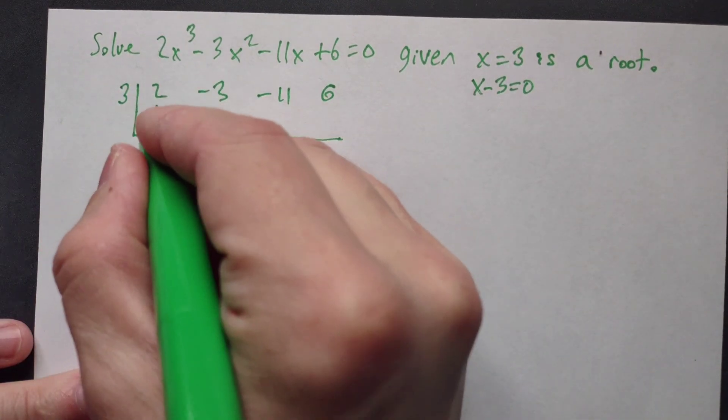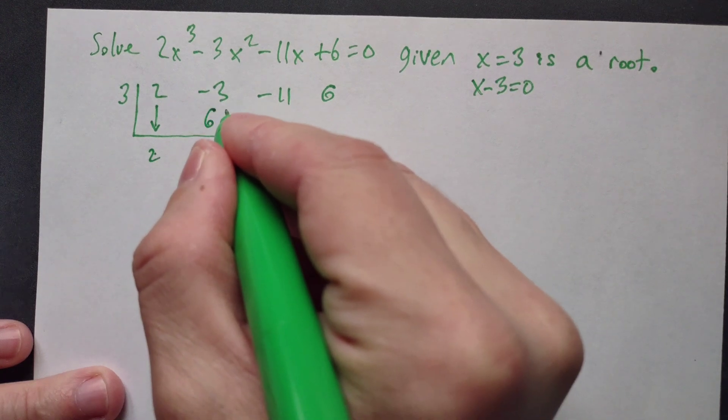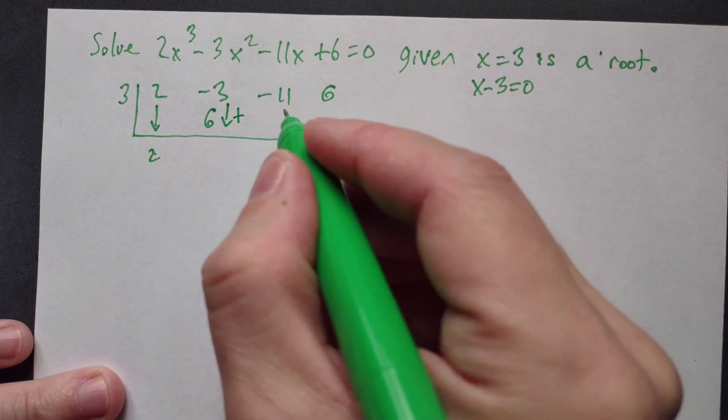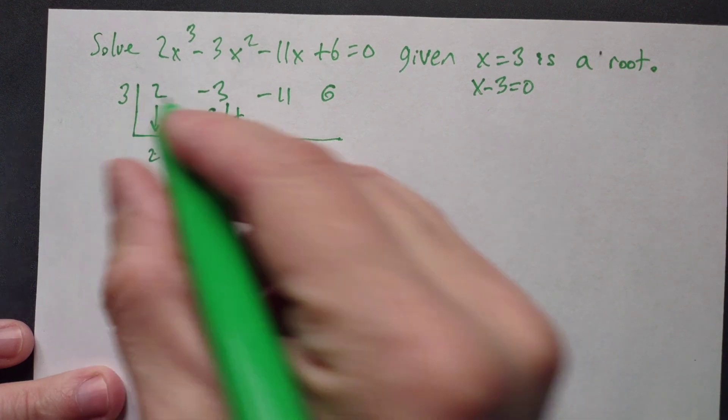You bring the 2 down, then do 2 times 3, which is 6. Add straight down: -3 + 6 = 3. Then 3 times 3 is 9.